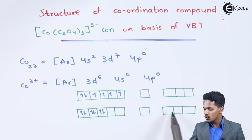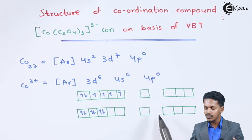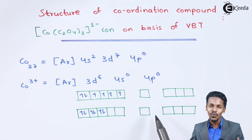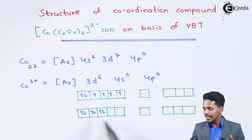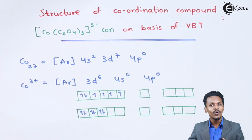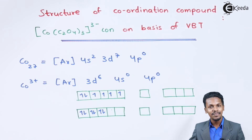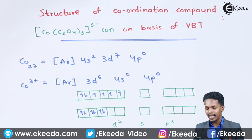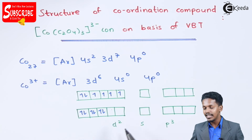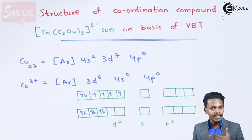So let us understand the hybridization. The empty orbitals available are 2 d orbitals, 1 s orbital, and 3 p orbitals. So the hybridization is d2sp3. Therefore, the Co³⁺ ion will undergo d2sp3 hybridization, and overall 3 moles of C₂O₄ will give 12 electrons to fill these orbitals.